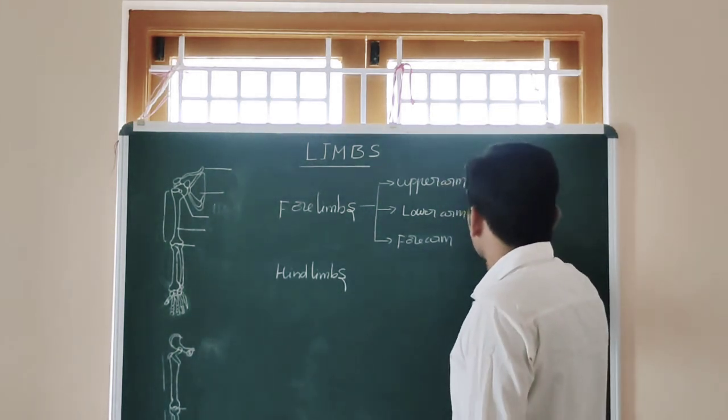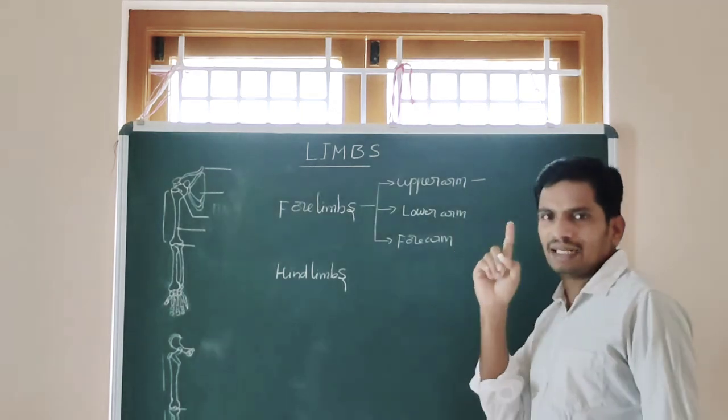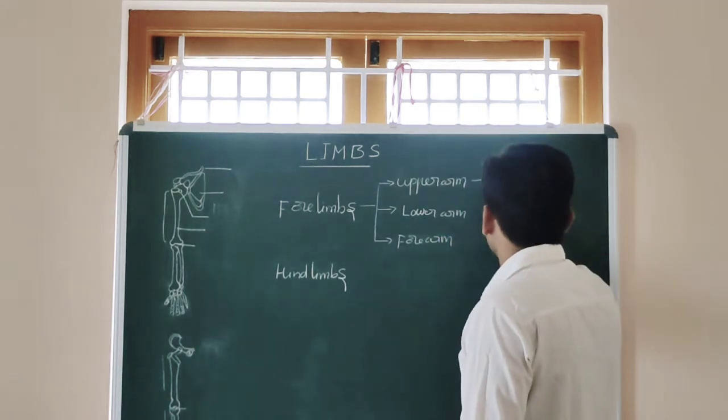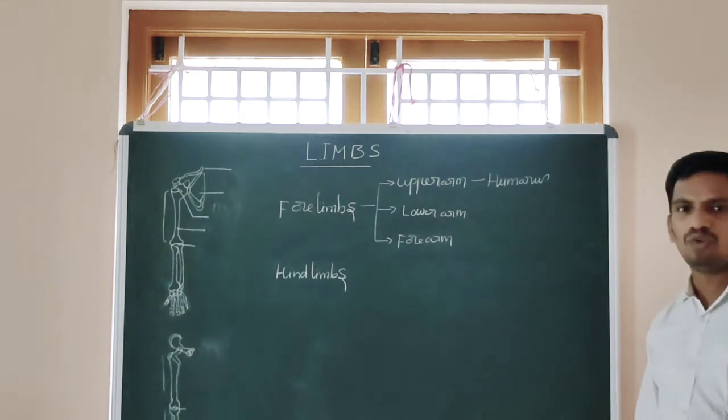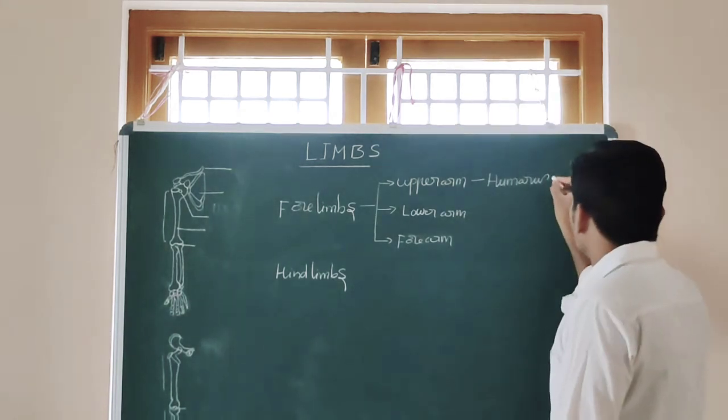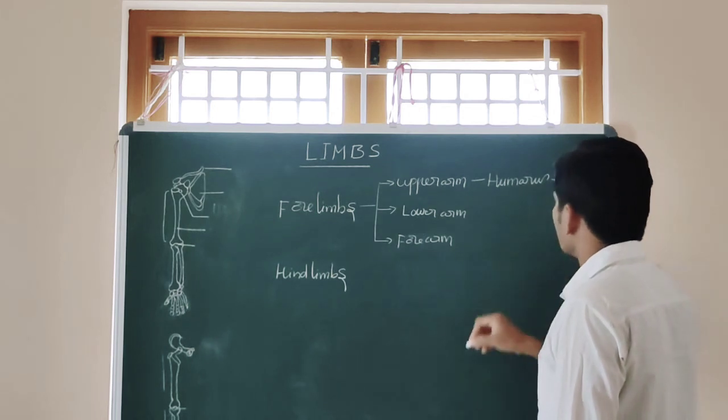The upper arm consists of only one bone, that is the humerus. What is the bone? Humerus. This is the only one bone.